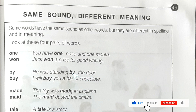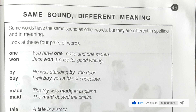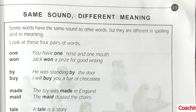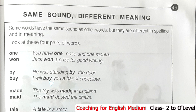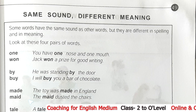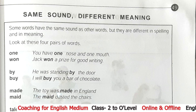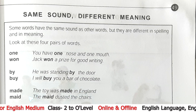Next: 'by' — he was standing by the door. Here we get one meaning of 'by' and one spelling. Later the pronunciation or sound is same, but meaning and spelling is different. The example is: I will buy you a bar of chocolate. Here we see 'buy' also has a different meaning.